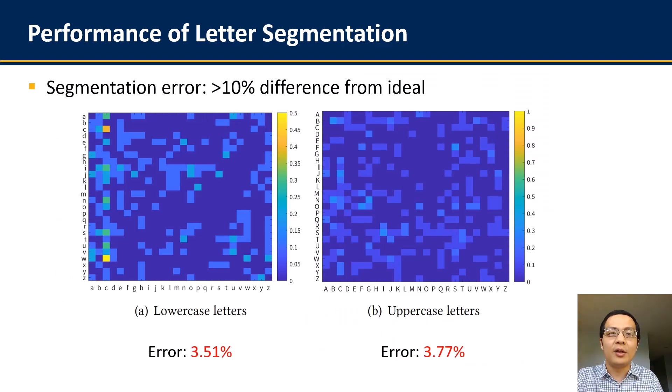So first, let's see the performance of MagHacker's letter segmentation, which is the core component that decides the accuracy of eavesdropping. We consider segmentation as erroneous if it has more than 10% of difference from ideal segmentation. So as you can see, for both lowercase and uppercase letters, the segmentation error is always within 4%, and most of the errors appear in the transition between few letters, especially the transition from letter C.